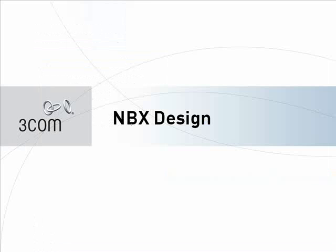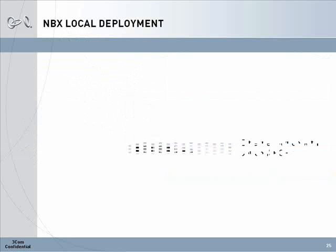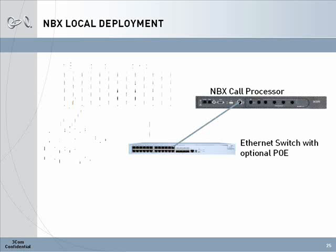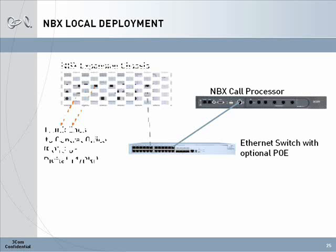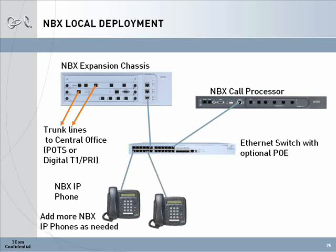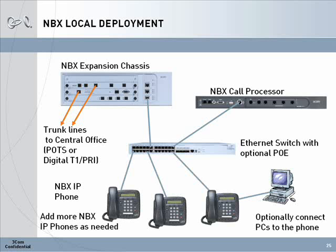Now I will go over a typical deployment of an NBX system. First, there needs to be an Ethernet network switch, which can support Power over Ethernet in order to power the phones. Next, we add the NBX call processor to the network. If needed, an NBX expansion chassis is added to support either additional analog trunk lines or a digital T1 or PRI integration. Finally, phones are added to the system as needed. Optionally, PCs can be connected through the phone switch port to have access to the network as well.